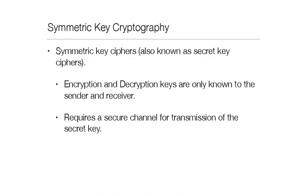In symmetric cryptography, the main thing is that these are also known as secret key ciphers — the encryption and decryption keys are only known to the sender and the receiver. This requires a secure channel for transmission of the secret key; perhaps sender and receiver can meet in person, exchange the secret key, or use a trusted messenger to physically send it. The entire security of the system depends on the security of the secret key.